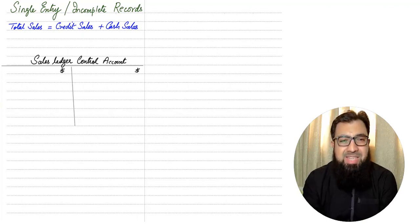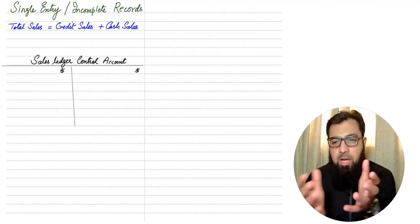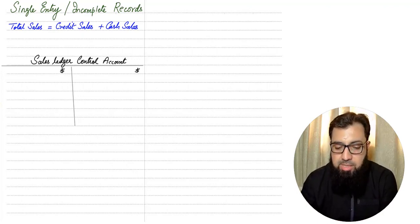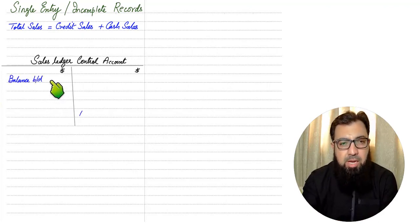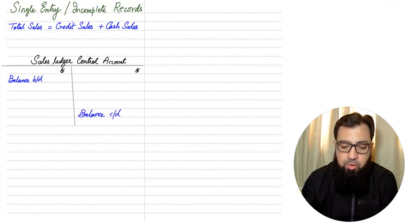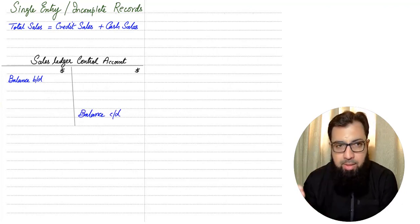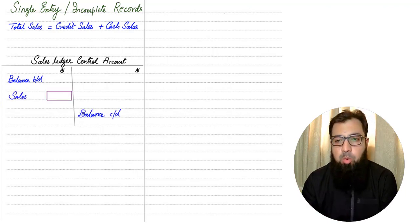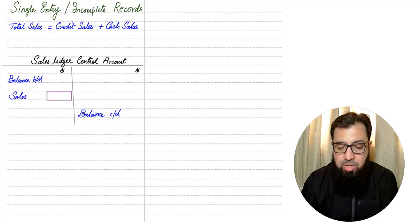The sales ledger control account is the debtors account — it is a combined account for all customers. Customers are an asset for the business, and the nature of an asset is debit. Therefore the balance brought down will come on the debit side, and the balance carried down, that is the closing balance, should come on the credit side. Whenever we sell goods on credit, our debtor goes up: the entry is debtors account debited and sales account credited. This is the sales figure we need to find.